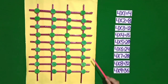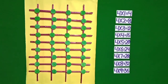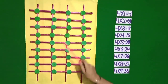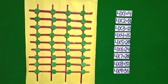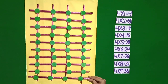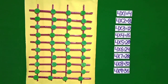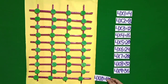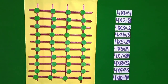Students, now there are 36 intersection points. I put one more stick in horizontal position. Now there are 40 intersection points. It means 4 tens are 40.